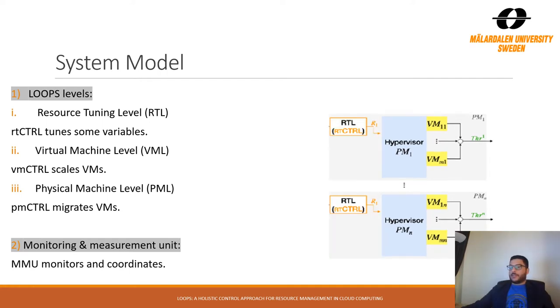The first level, RTL, tunes the resources that are already allocated to the VMs. It adjusts shared resources inside each physical machine to regulate the contention per VM. RT controller here can modify three variables for implementing the amount of resources each VM receives from the PM during contention. They are shares, limits, and reservation, and this is done according to four control strategies.